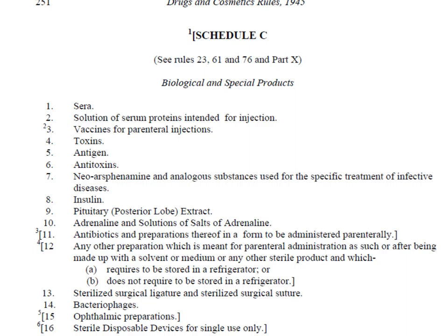Schedule C gives a list of biological and special products. Here in this slide, I have reproduced a part of Schedule C for you to understand exactly what it contains. The list of products under Schedule C includes sera, solution of serum proteins, all vaccines for parenteral use, toxins, antigens, antitoxins, and so on. As you can see, ophthalmic preparations also fall under Schedule C and therefore have to comply with its provisions. Please open Schedule C and read the entire list to understand the products that fall under it and the provisions related to them.